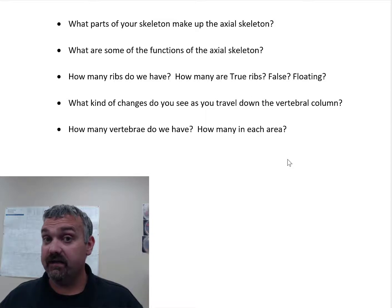Now your appendicular skeleton is going to be your arms and legs and the bones that attach them to your core. That can be a little confusing, so I'll review it there as well, but the pectoral girdle, which is the clavicle and scapula, they're not actually part of your arm, but they are part of the appendicular skeleton, and your pelvic girdle is going to be your pelvic bones, your ileum, ischium in the back, and pubis in the front.